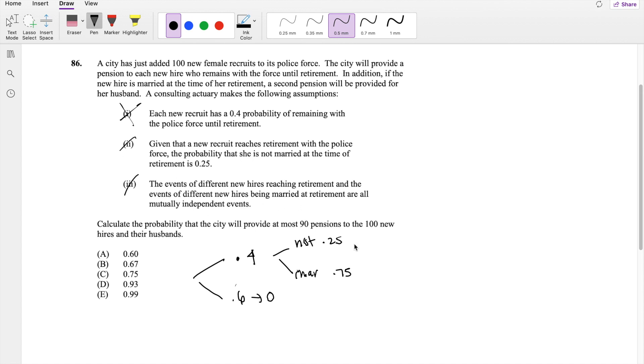So if you're not married, you can only get one pension, right? Because it's just the insurance pension for yourself. But if you're married, you can get two, which is really nice of them. The probability that you're not married is 0.25 times 0.4, which is 0.1. And the probability that you're married and staying until retirement is 0.75 times 0.4, which is 0.3.